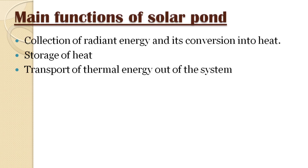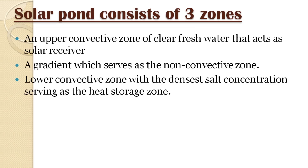There are three main functions of a solar pond: one is the collection of radiant energy and its conversion into heat, next is the storage of heat, and third is the transport of thermal energy out of the system. There are also three zones: the upper convective zone, the non-convective zone, and the lower convective zone.